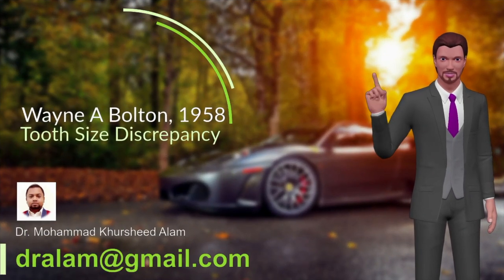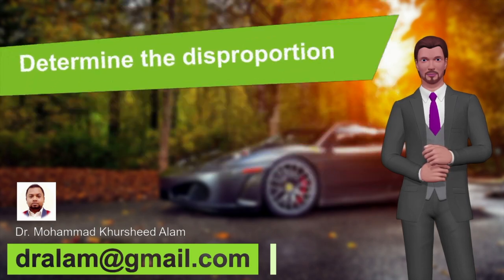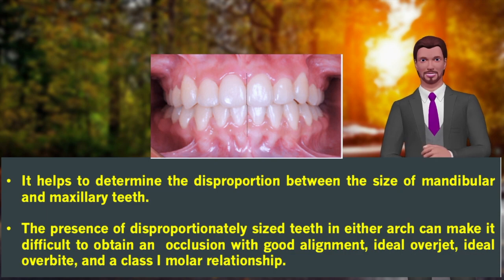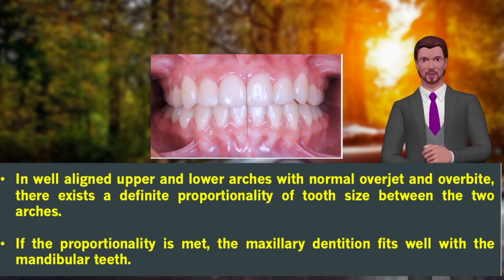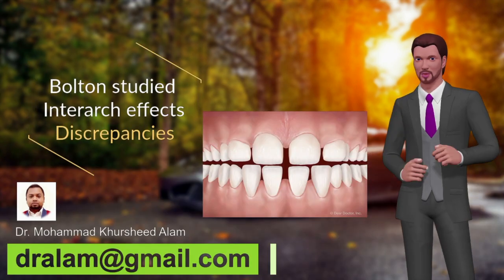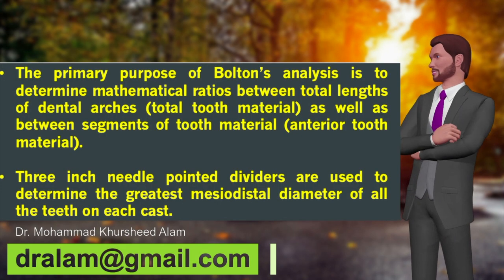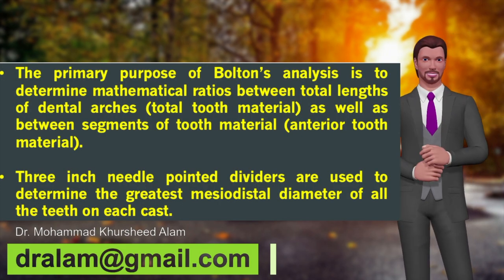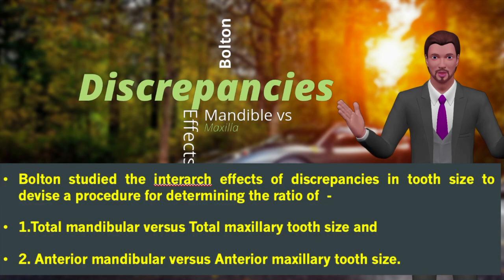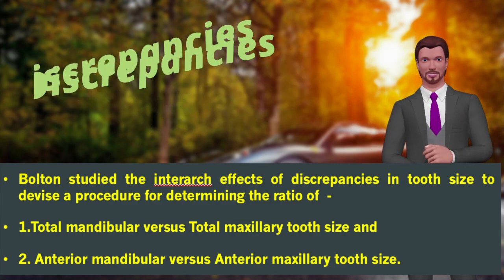Bolton analysis helps to determine the disproportion between the size of mandibular and maxillary teeth. In well-aligned upper and lower arches with normal overjet and overbite, there exists a definite proportionality of tooth size between the two arches. If the proportionality is met, the maxillary dentition fits well with the mandibular teeth. Bolton studied the inter-arch effects of discrepancies in tooth size to devise a procedure for determining the ratio of total mandibular versus total maxillary tooth size and anterior mandibular versus anterior maxillary tooth size.